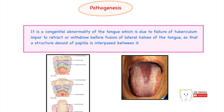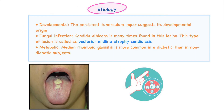The pathogenesis of median rhomboid glossitis is an abnormality of the tongue wherein there is a failure of the tubercular impar to retract or withdraw itself just before the fusion of the lateral halves of the tongue. This results in a structure devoid of papillae. According to pathogenesis, it is therefore a congenital anomaly of the tongue.